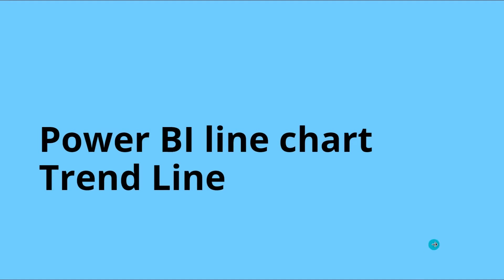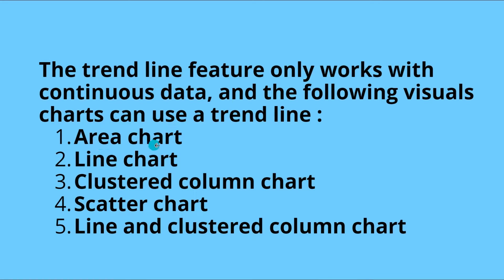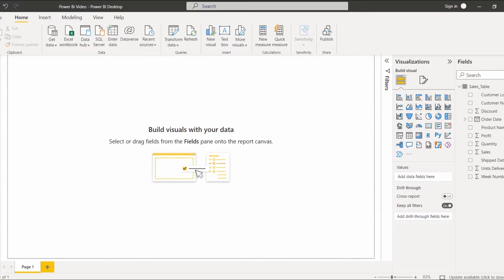What is a Power BI line chart trend line? A trend line is a feature that only works with continuous data to display the direction of overall data. The following visuals support trend line: area chart, line chart, clustered column chart, scatter chart, and line and clustered column chart. Now we will see how to add the trend line feature to a Power BI line chart visual.